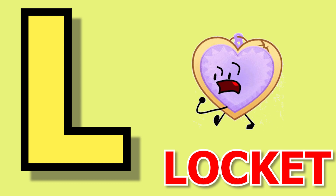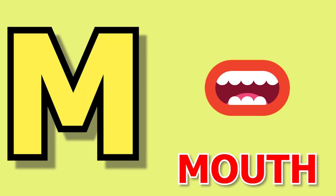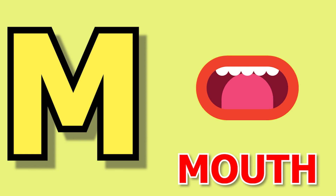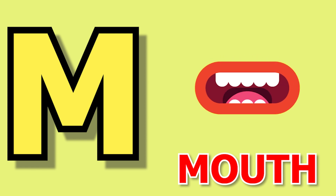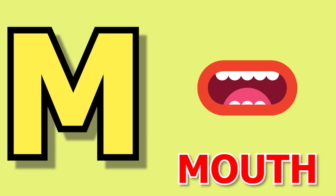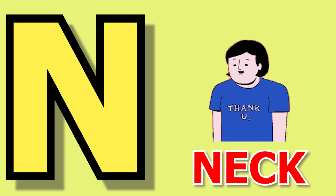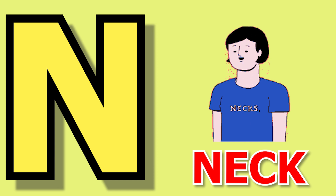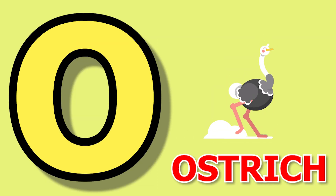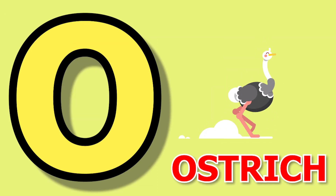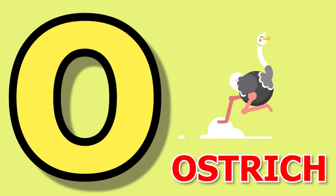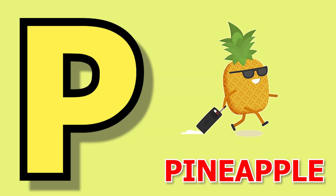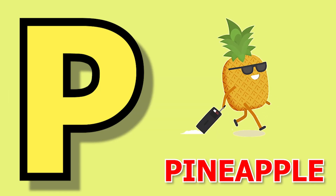M for mouth, mouth means moo. N for neck, neck means garden. O for ostrich, ostrich means ostrich. P for pineapple, pineapple means ananas.